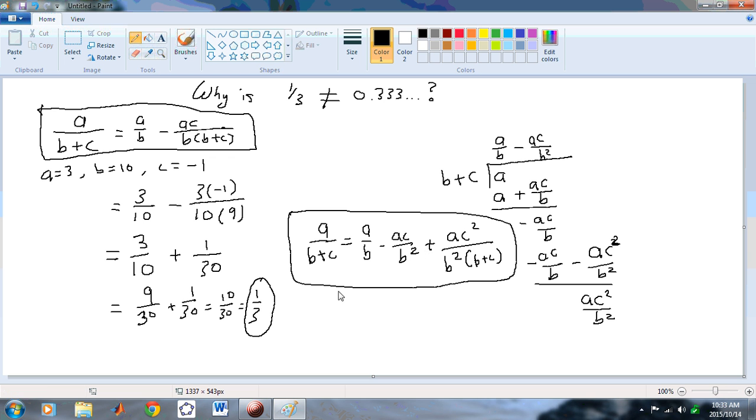So generally, we can see that a pattern here is going to emerge. And that pattern that you'll see is this: A over B plus C is equal to A over B minus AC over B squared plus AC squared over B cubed minus AC cubed over B to the fourth plus dot dot dot.